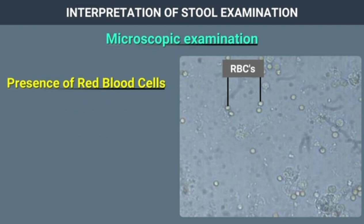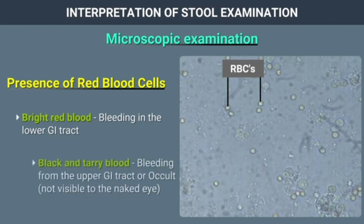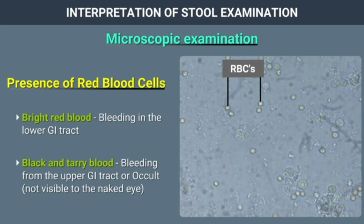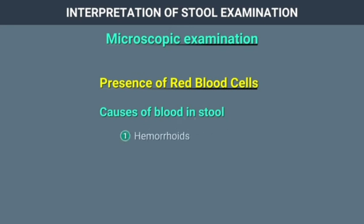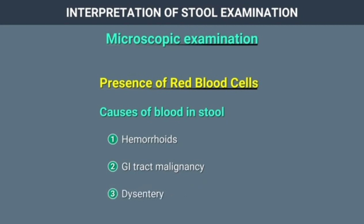Presence of red blood cells in the stool: Blood in stool can be bright red from bleeding in the lower gastrointestinal tract, black and tarry from bleeding in the upper gastrointestinal tract, or occult, which is not visible to the naked eye. Causes of blood in stool include hemorrhoids, GI tract malignancies, and dysentery.